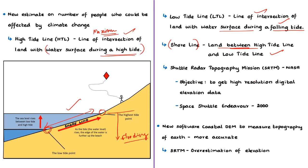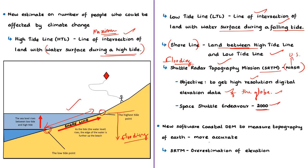At present, estimates on risks posed by flooding are based on maps of Earth taken by the Shuttle Radar Topography Mission, in short SRTM — a NASA mission. The objective of SRTM is to get high-resolution digital elevation data of the entire Earth. It was launched by the space shuttle Endeavour of NASA in 2000.